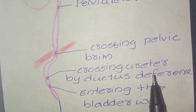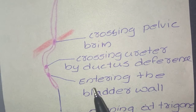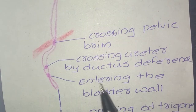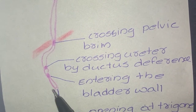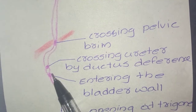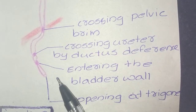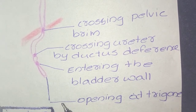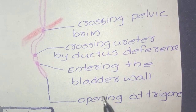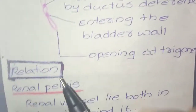The fourth constriction is where the ureter enters the bladder wall. The fifth constriction is present at the opening at the trigone, which is in the urinary bladder.